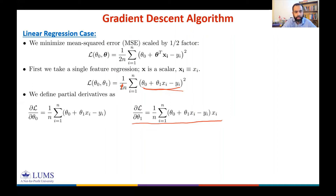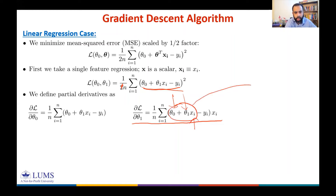We have computed the partial derivatives. To evaluate them you need θ₀, θ₁, and the inputs. The quantity (θ₀ + θ₁xᵢ) is the prediction by your model, and yᵢ is the true label — all of which are available in your data.